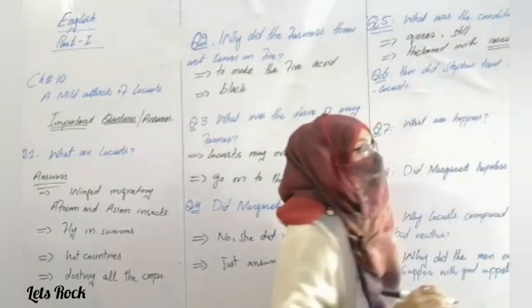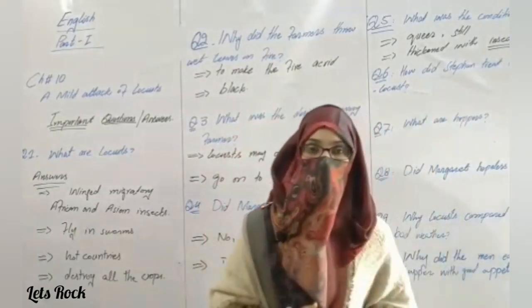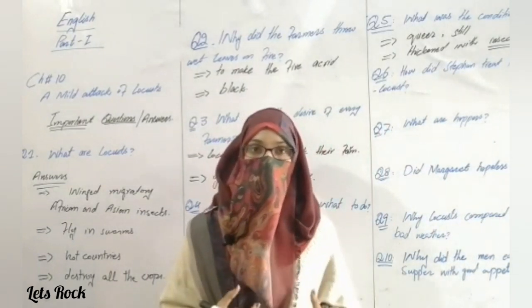Question number six: How did Stephen treat the stray locust? When a stray locust fell on old Stephen, he picked it up.